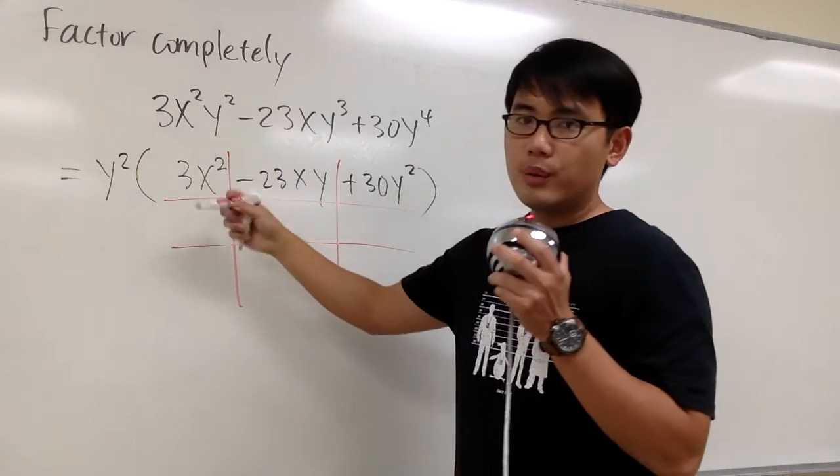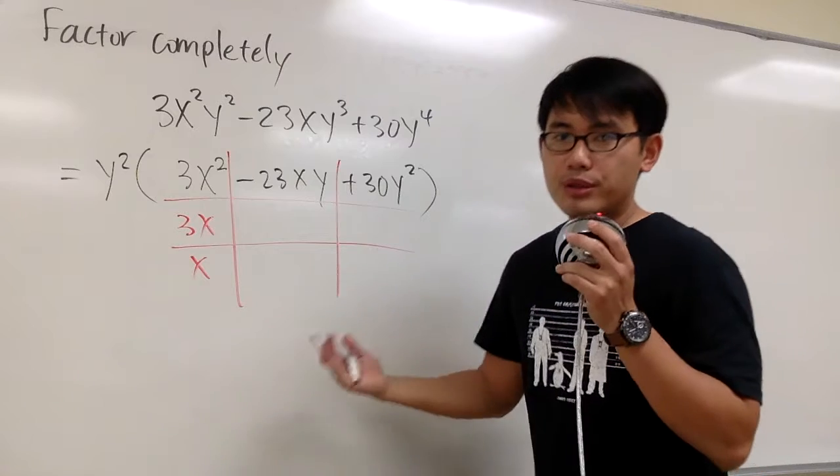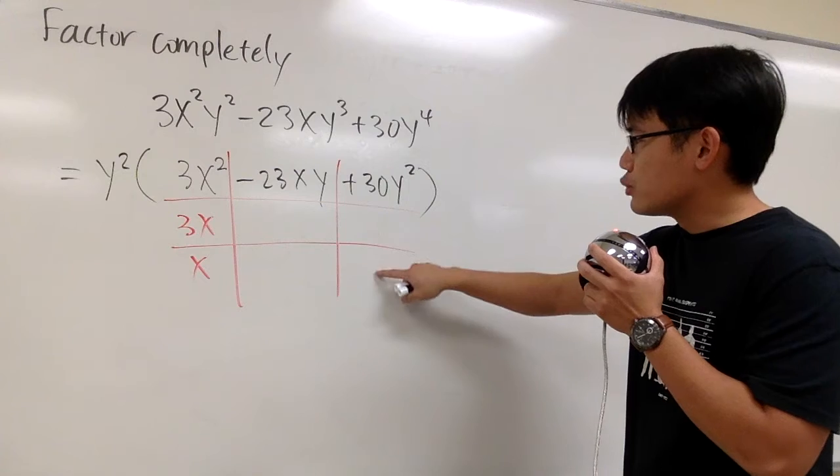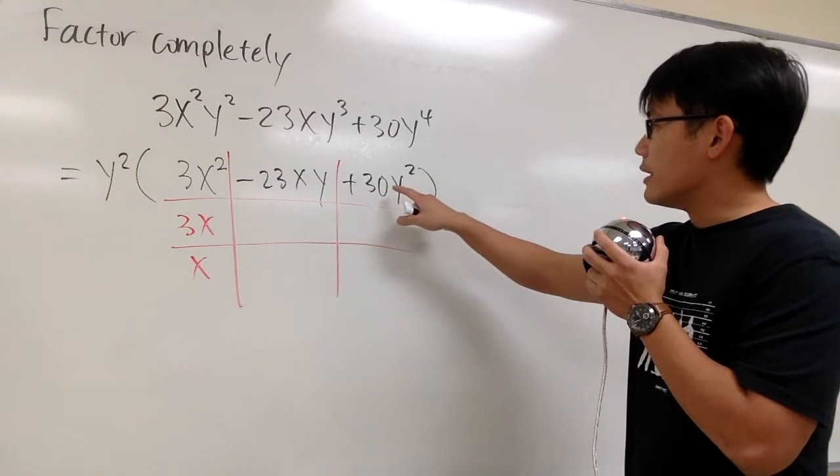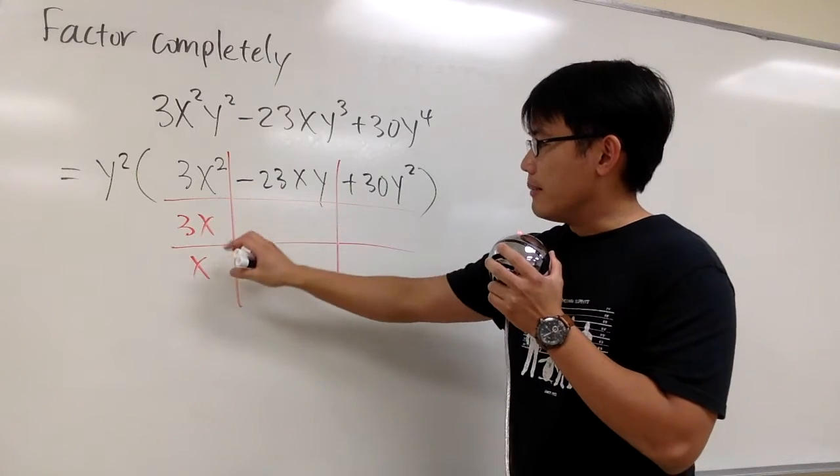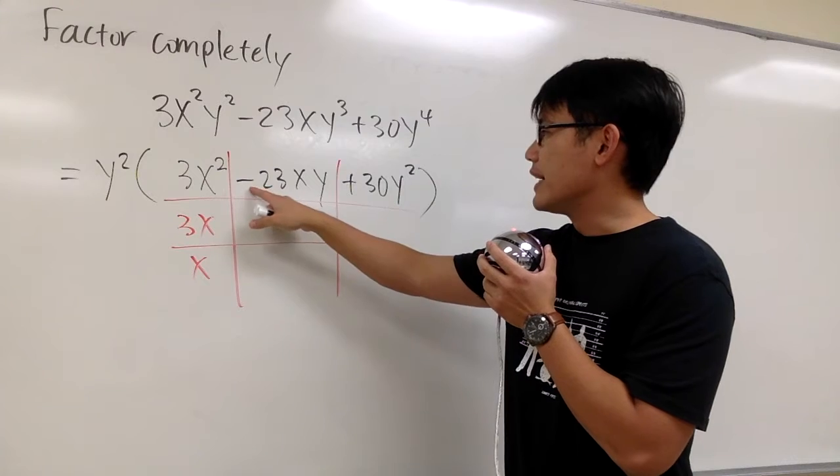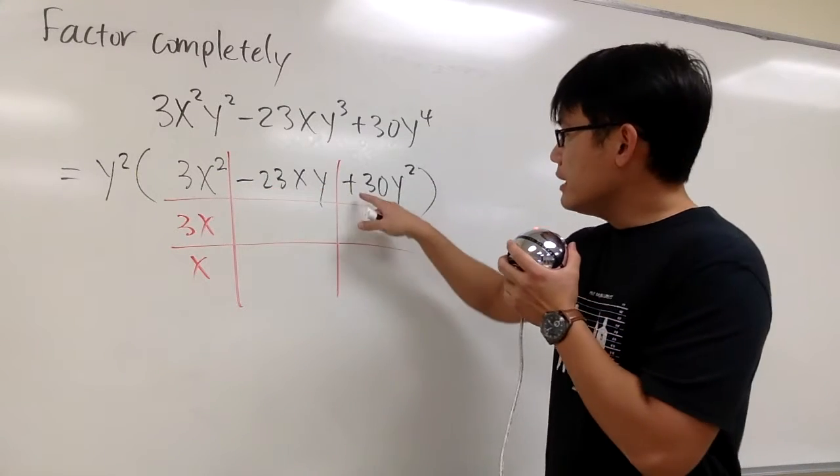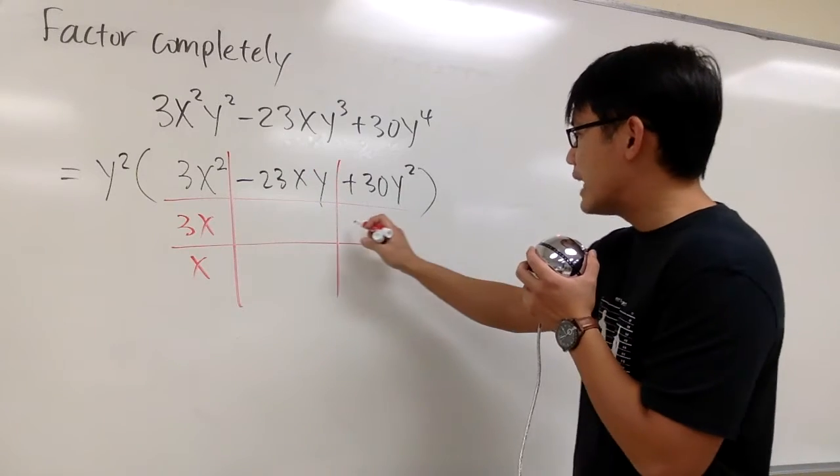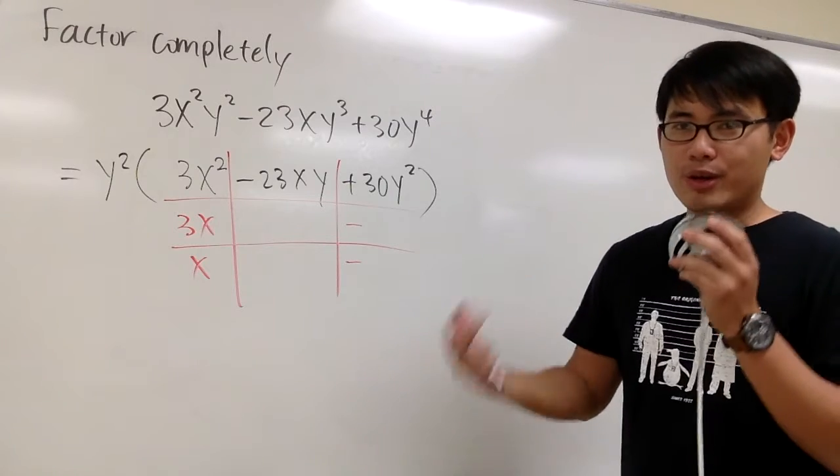To get 3x², well, the only way is 3x and x, right? So that's pretty clear. But then, to get positive 30y², I have to think about what times what will give us positive 30y². And in the meantime, I'm going to cross-multiply and then check to see if we can end up with negative 23xy. This is positive, but then at the end, I want to end up with negative. That means I must have negative and negative, okay?